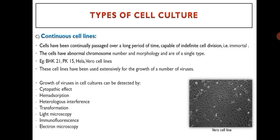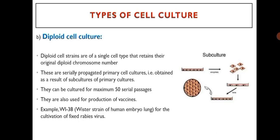Continuous cell lines: cells have been continually passaged over a long period of time and are capable of indefinite cell divisions — i.e., they are immortal. The cells have an abnormal chromosome number and morphology and are of single cell type. Examples include BHK21, PK15, HeLa, and Vero cell lines. These cell lines have been used extensively for the growth of a number of viruses. Growth of virus in cell cultures can be detected by cytopathic effect, hemagglutination, heterologous interference, transformation, light microscopy, immunofluorescence, and electron microscopy.